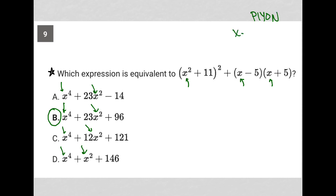I like to use 2 for my number. So I'm going to say x equals 2. Now, if x equals 2, that means I can rewrite my original expression as 2 squared plus 11 squared plus 2 minus 5 times 2 plus 5.